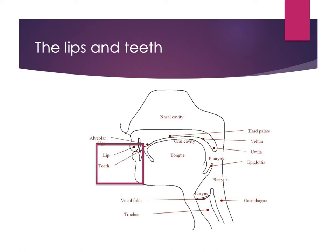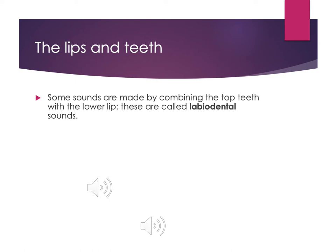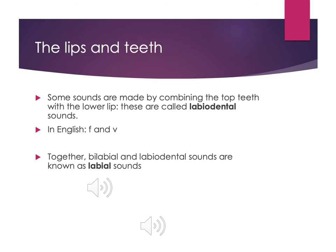Next we combine the use of our lips and our teeth. The teeth are also an important place for making certain kinds of sounds. When we combine lips and teeth together, these are known as labiodental sounds — labio meaning lip, dental meaning teeth. In English, it's our F and V sounds that are labiodental sounds. More broadly, any sound using the lips in any capacity is called a labial sound.